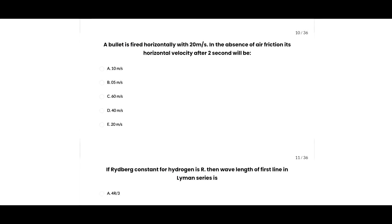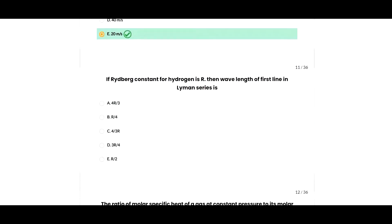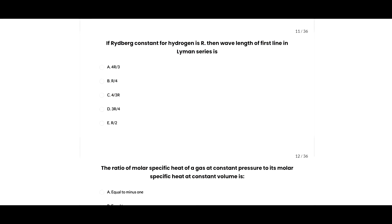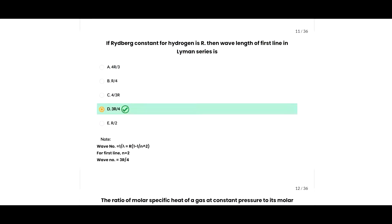Next question: a bullet is fired horizontally with 20 meters per second. In the absence of air friction, its horizontal velocity after 2 seconds will be given as 20 meters per second, so B option is correct. Next question: for the Lyman series, the ratio is 1 minus 1 over n squared, so D option is correct.